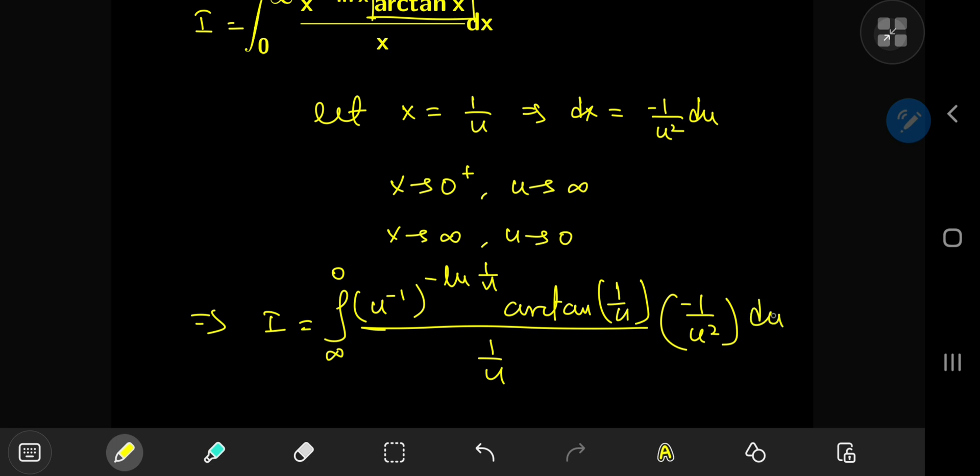Now we can get rid of this negative sign if we switch up the limits of integration so that it doesn't look that weird anymore. So we have the integral from 0 to infinity now, and we don't have that pesky negative sign to worry about.